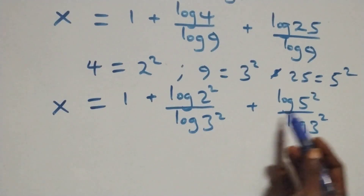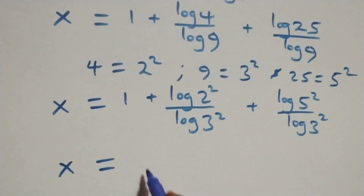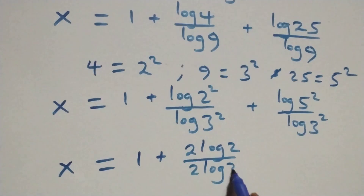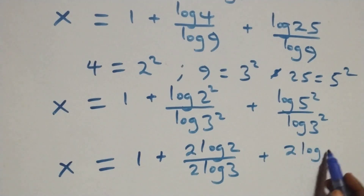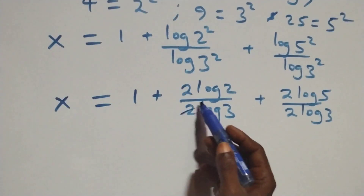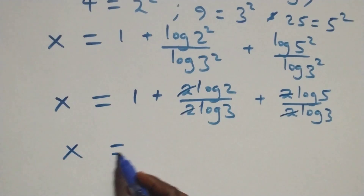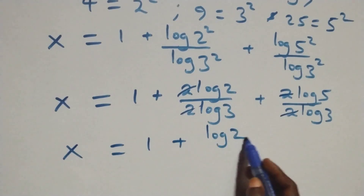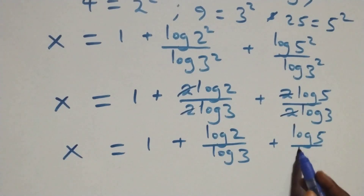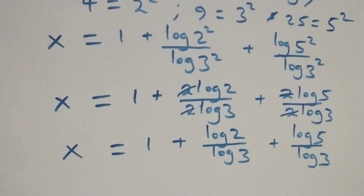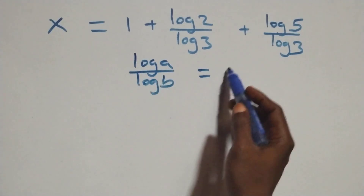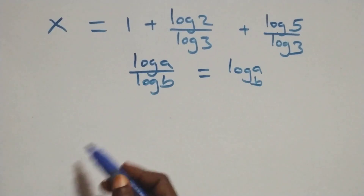Then we apply the power of log: the 2 comes out here, 2 comes out here, also 2 comes out here. We have x equals to 1 plus (2·log 2 over 2·log 3) plus (2·log 5 over 2·log 3). The 2s cancel each other, so we have x equals to 1 plus (log 2 over log 3) plus (log 5 over log 3). Then here we apply the change of base formula: log a over log b is the same as log base b of a.